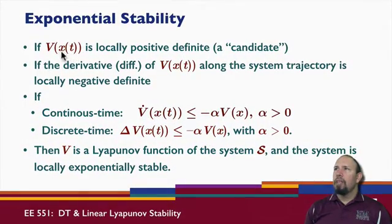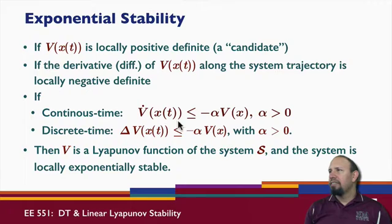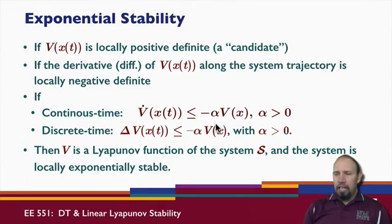What about exponential stability? So if V of X of T is locally positive definite, and if the derivative or difference of V along the system trajectory is locally negative definite, and for continuous time we've seen this guy already. In discrete time, we now have this inequality for some alpha greater than 0. Then V is a Lyapunov function of the system, and it is locally exponentially stable. So this shows that not only is the derivative or the difference a negative definite function, but it's actually bounded by the actual original V.